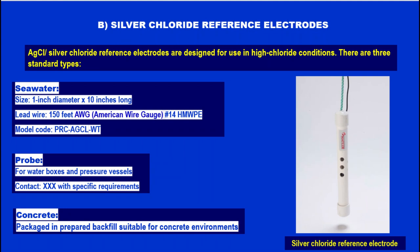The next type of electrode is Silver/Silver Chloride Reference Electrodes, designed for use in high chloride conditions. There are three standard types: 1. Sea water applications — size 1-inch diameter, 10-inch long, with a probe lead wire of 150 feet, 14 AWG, high molecular weight polyethylene. Model code: PRCAGCLWT. 2. Probe for water boxes and pressure vessels — contact the supplier with specific requirements. 3. Concrete — packaged in prepared backfill suitable for concrete environments.